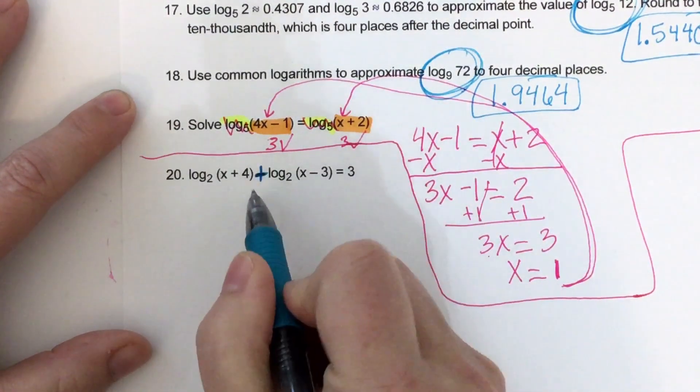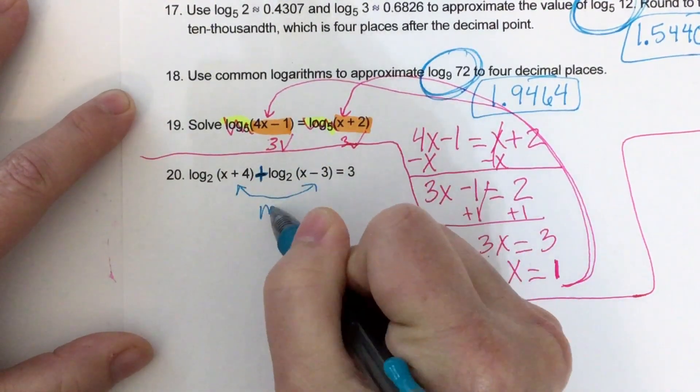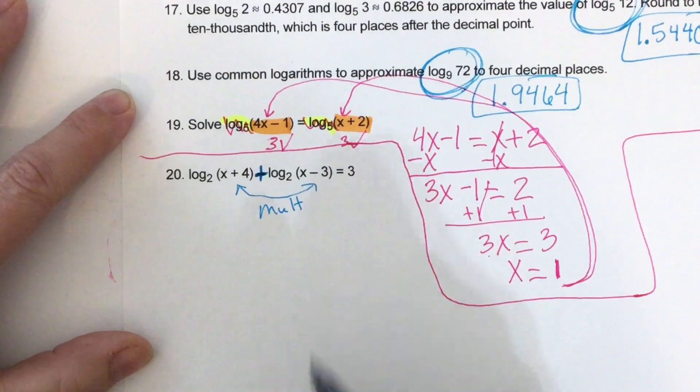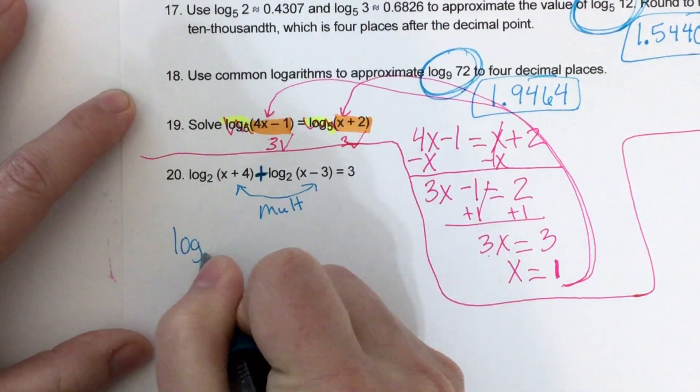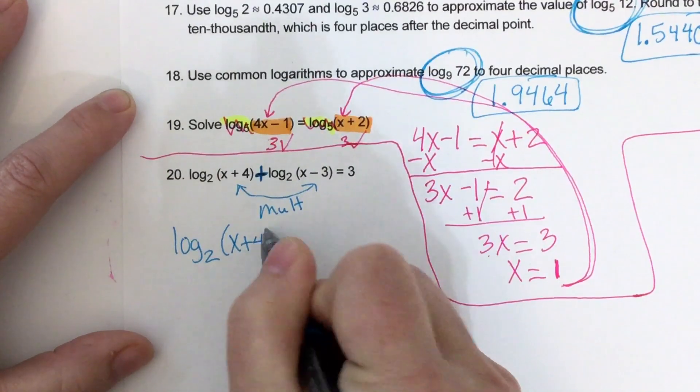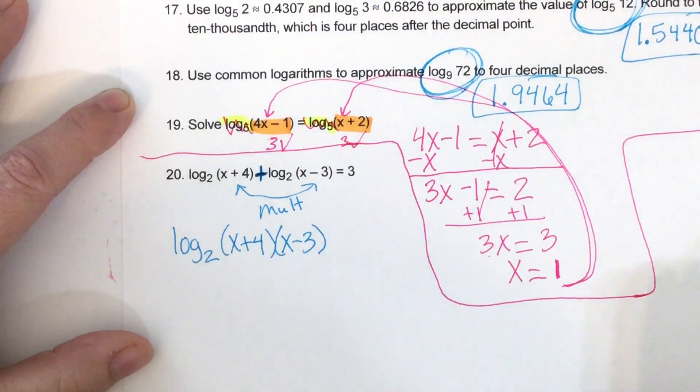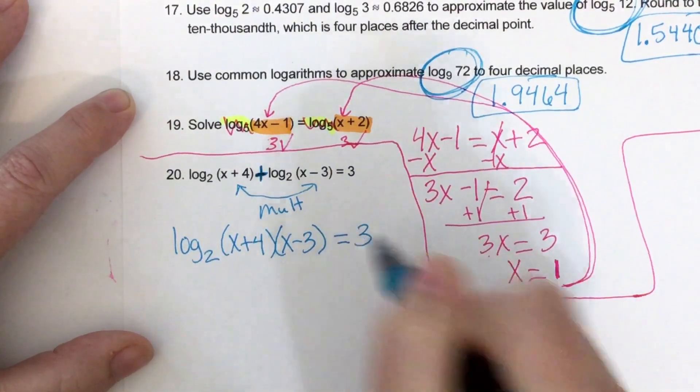Okay. So when we see addition, it means to multiply these two together. So I write log base 2. And then I'm going to multiply my x plus 4 and my x minus 3. And then I recopy equals 3.